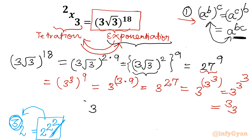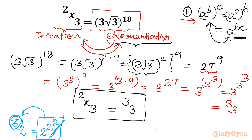So now I write: 3 superpower x superpower 2 equals 3 superpower 3. Since the base is the same on both sides, we can compare their superpowers directly — in tetration this is called comparing superpowers.